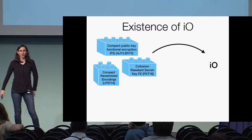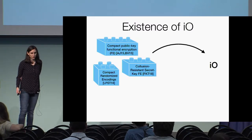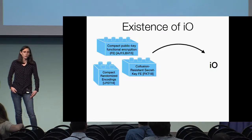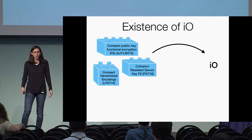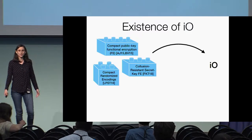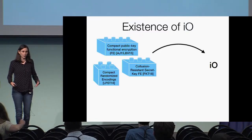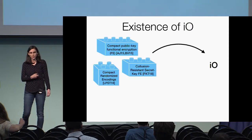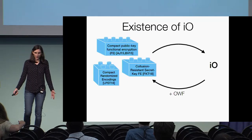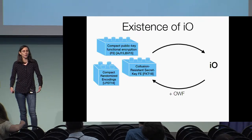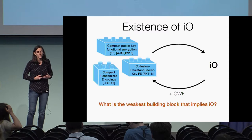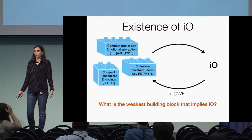There are quite a few building blocks which have been shown to imply IO, such as different types of functional encryption, randomizing codings, and others. However, one drawback of these constructions is that for many of them, not only do we not know how to base them on standard assumptions, we also don't know how to base them on something that is even weaker than IO in some provable way. In particular, the only way we know how to obtain many of these is based on IO itself. So if we want to understand the foundations of IO, it's crucial to know what the minimal building block is upon which we can base IO.